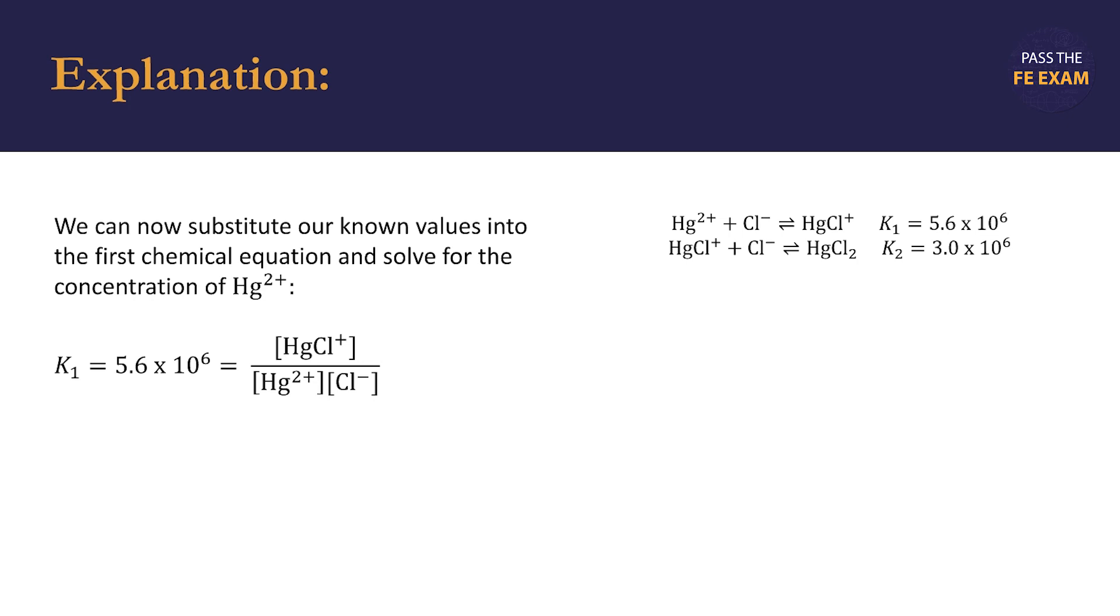We isolate our unknown variable, the concentration of the mercury cation Hg2+, to be on the left-hand side of the equation. Then we multiply and divide out the right-hand side of the equation. This leaves us with the concentration of the mercury cation Hg2+ to be 4.3 times 10 to the negative 17 M.